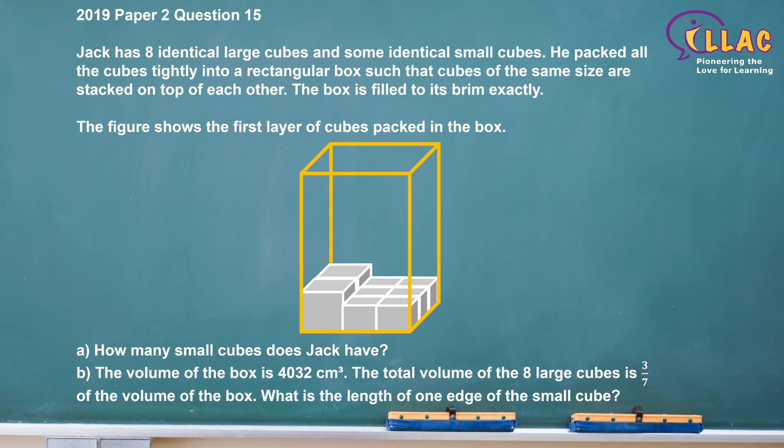The figure shows the first layer of cubes packed in the box. How many small cubes does Jack have? The volume of the box is 4032 cubic centimeters. The total volume of the 8 large cubes is 3 over 7 of the volume of the box.